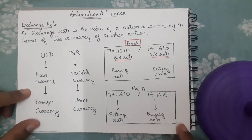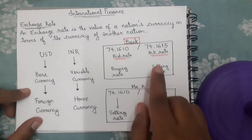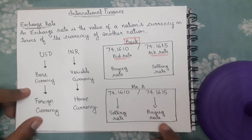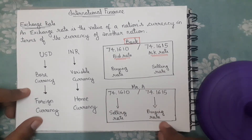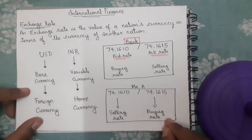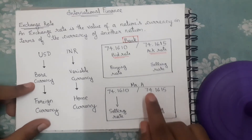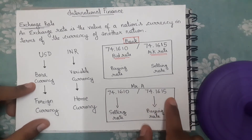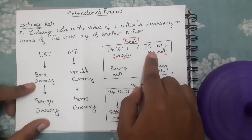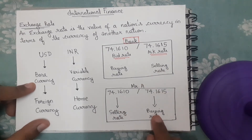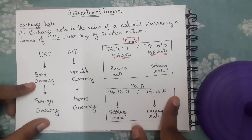For Mr. A, 74.1615 is his buying rate — he would be buying each dollar for 74.1615 rupees. So the ask rate is the selling price of the bank and the buying price for Mr. A.